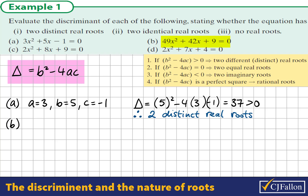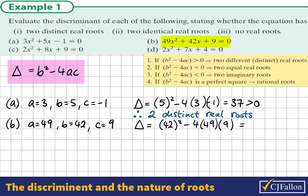In part b, we see that we have 49x squared plus 42x plus 9 is equal to 0. So a is 49, b is 42, and c, the constant term, is 9. The discriminant is equal to 42 squared minus 4 times 49 by 9. If we put this into the calculator, we see it's equal to 0.